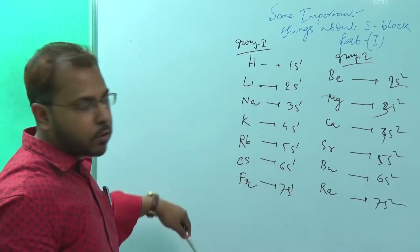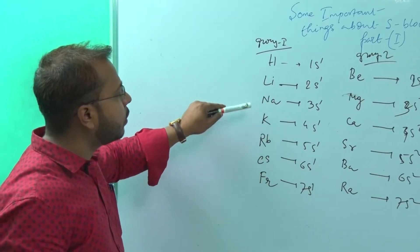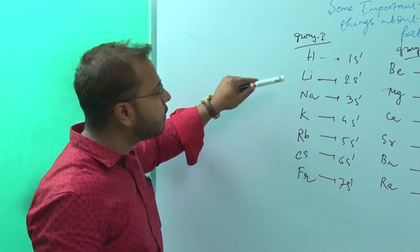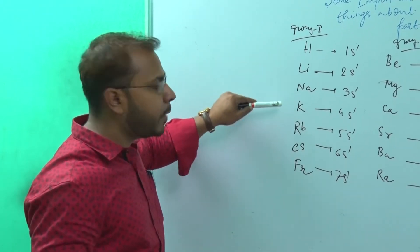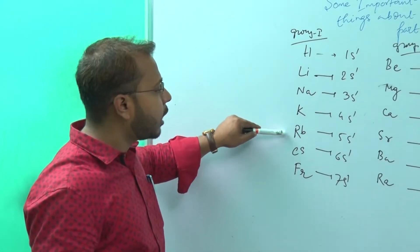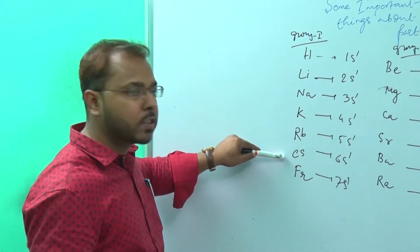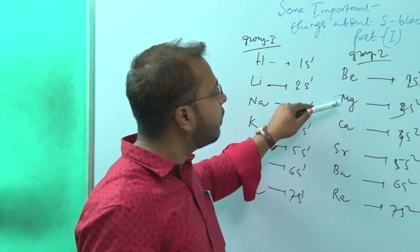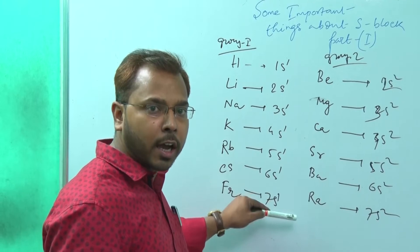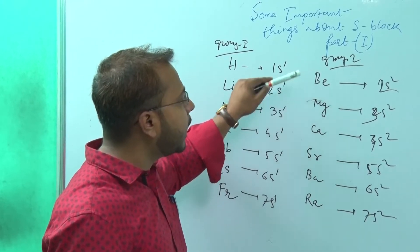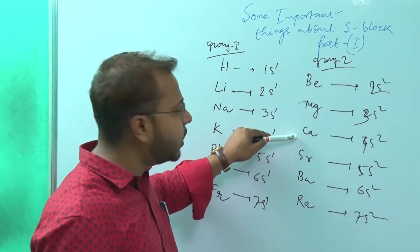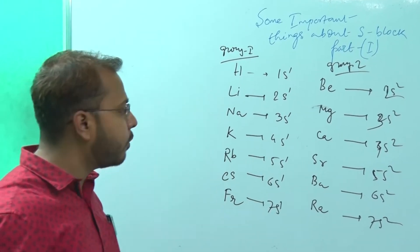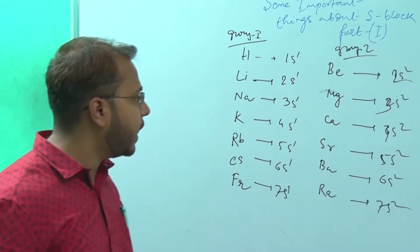To remember Group 1 elements, we can apply a trick: 'His Last Son Plays Rugby Cricket and Football' — Hydrogen, Lithium, Sodium, Potassium, Rubidium, Cesium, Francium. For Group 2: 'But My Cum Son Bakes For Rugby' — Beryllium, Magnesium, Calcium, Strontium, Barium, Radium.